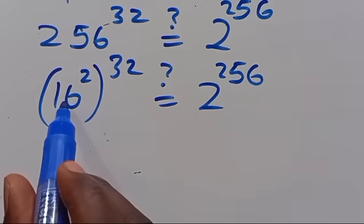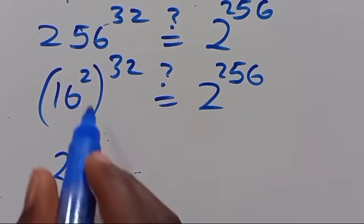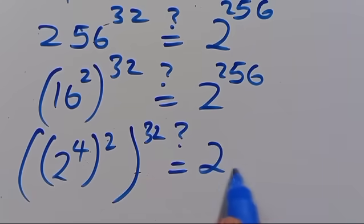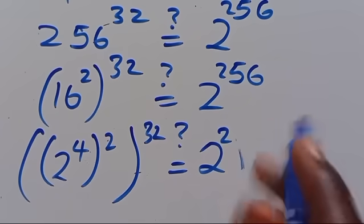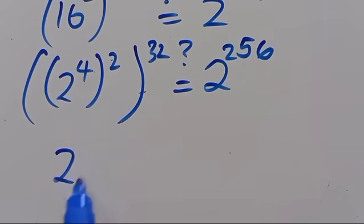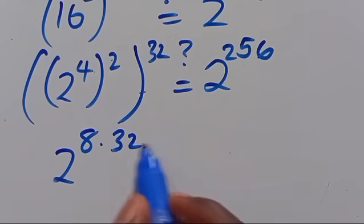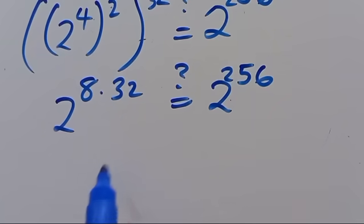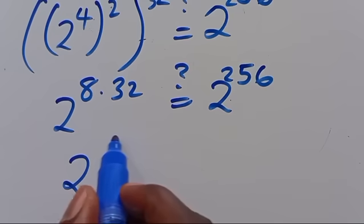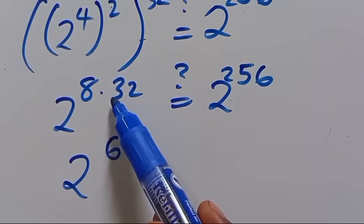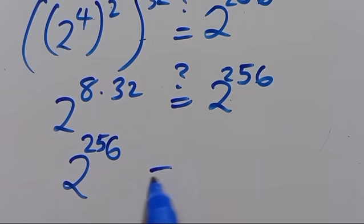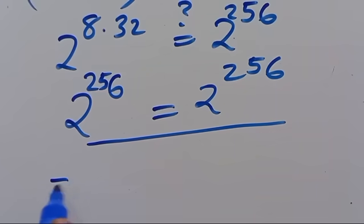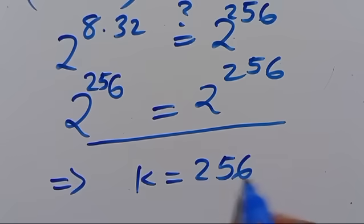So we have 2 to the power of 4, to the power of 2, to the power of 32, which gives 2 to the power of 4 times 2 times 32. That is 8 times 32: 8 times 2 is 16, carry 1; 8 times 3 is 24 plus 1 is 25. So we get 2 to the power of 256 equals 2 to the power of 256. The left hand side equals the right hand side, and this implies K equals 256, which satisfies the problem given to us.